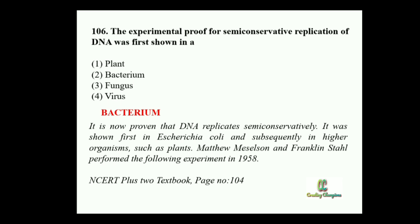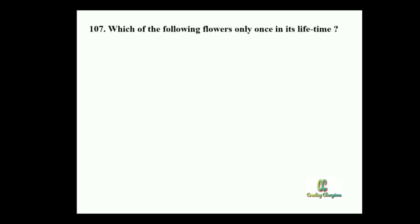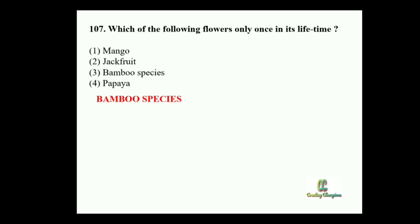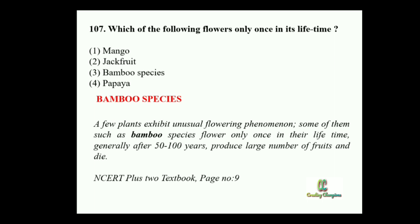Next question: Which of the following flowers only once in its lifetime? Option 1: Mango. Option 2: Jackfruit. Option 3: Bamboo species. Option 4: Papaya. The answer is bamboo species, because bamboo species exhibit an unusual flowering phenomenon — these species flower only once in their lifetime, generally after 50 to 100 years, produce a large number of fruits, and then die. Mango, jackfruit, and papaya are polycarpic fruits that produce flowers and fruits many times in their lifetime.